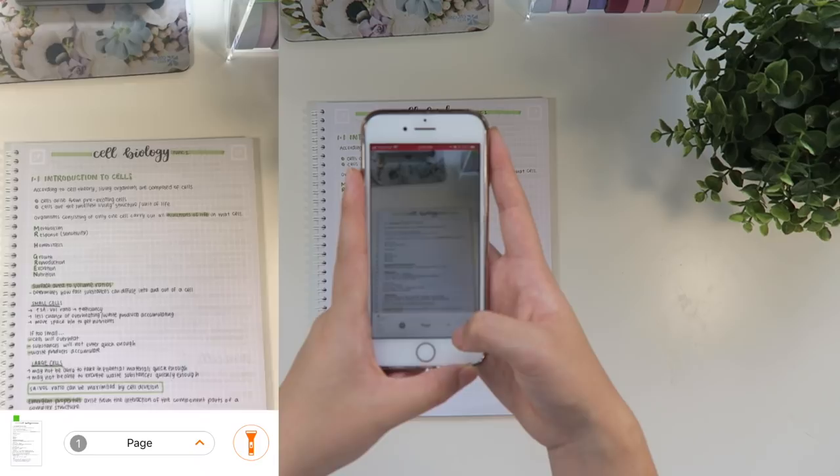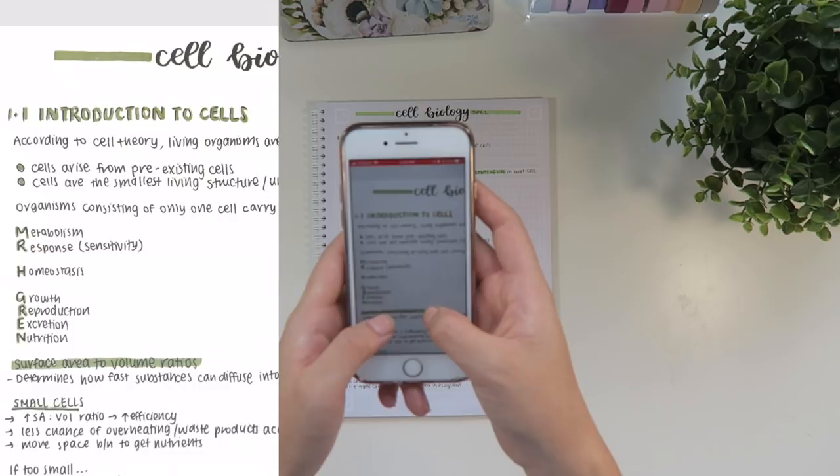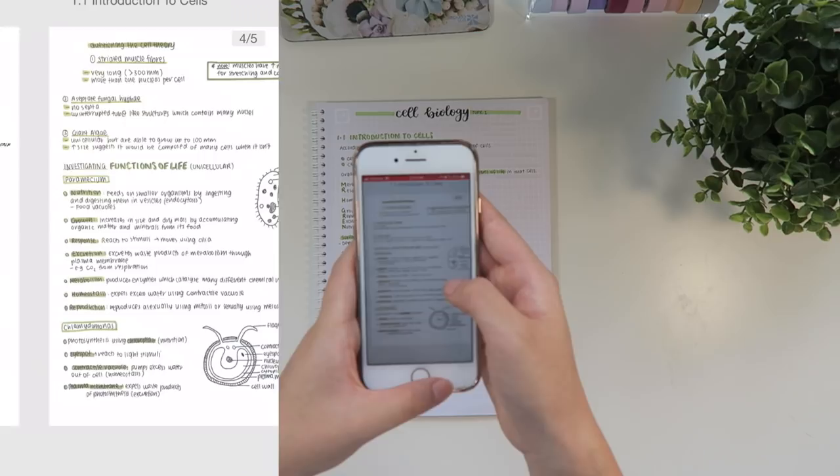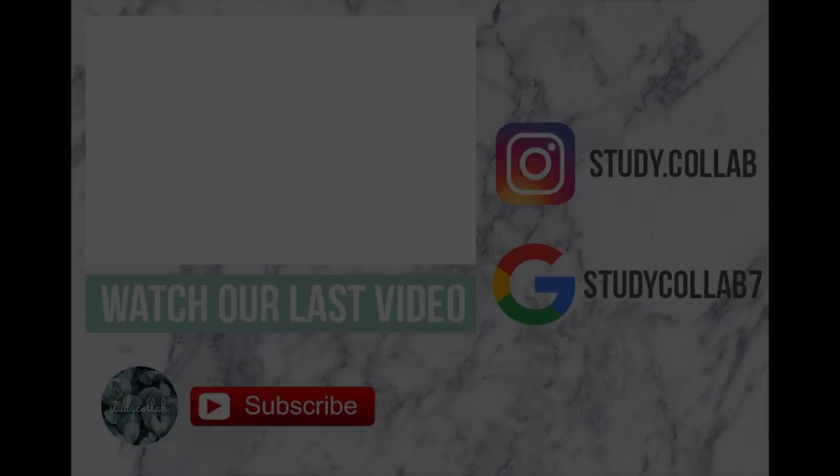And then if you zoom in I'll show you here, the quality is pretty good. Like you can read the notes exactly how they are and then you can save them into different stacks of notes. So here I've just saved them into subtopics that are on the syllabus, but I thought that was a really great way to just have an extra copy of your notes in case you lose them.